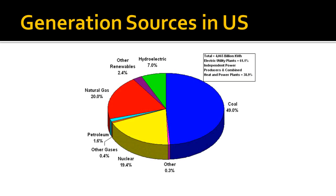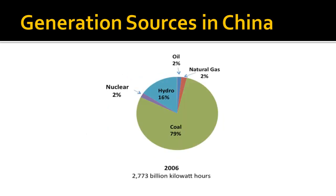49% of electricity generation in the United States comes from coal, 20% from natural gas, and 19.4% from nuclear sources. Renewable sources such as hydroelectricity only make up 9.4%. China's electricity generation is also similar to that of the United States — it is heavily reliant on coal, making up 79% of its power production.